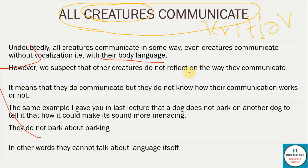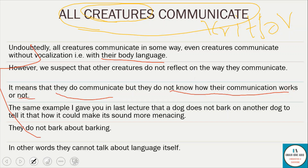However, we suspect that other creatures do not reflect on the way they communicate. Just like we can reflect on language and talk about language itself, and talk about things not present in the immediate environment — other creatures do not reflect on language the way human beings do. They do communicate, but they do not know how their communication works. Monkeys, gorillas, and all other animals communicate, but they do not know how their communication works. But we know how our communication works.